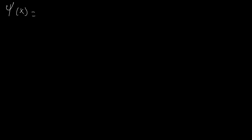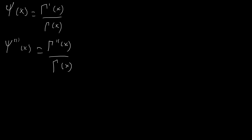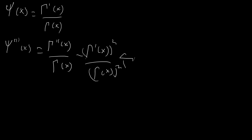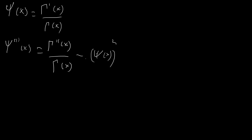Another definition of the digamma function is digamma of x equals gamma prime of x over gamma of x. The great thing is that if we differentiate this repeatedly we'll eventually get a term with gamma triple prime of x, which is what we're solving for. Differentiating once, we get gamma double prime of x over gamma of x, and by the quotient rule we also get a negative gamma prime of x squared over gamma of x squared — but that second term is just digamma of x squared.